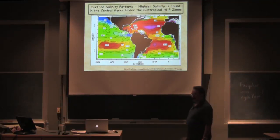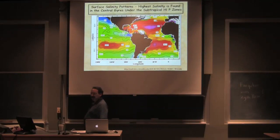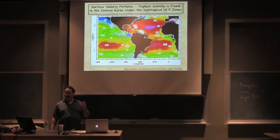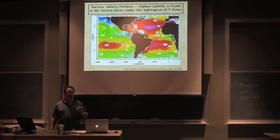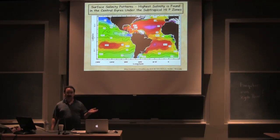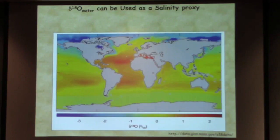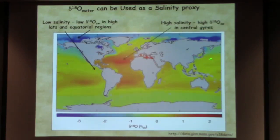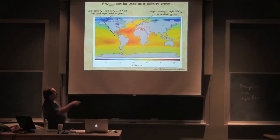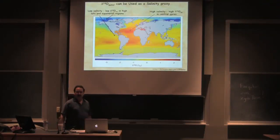Where would you expect to see the highest δ¹⁸O values in the ocean at the surface? You'd want zones where it's evaporating to get the highest values — the central gyres. That's exactly what we find: the highest δ¹⁸O values sit right in the central gyres. We get our lowest δ¹⁸O values associated with the ITCZ.